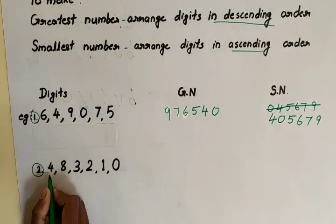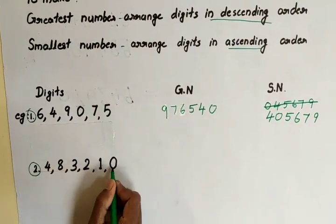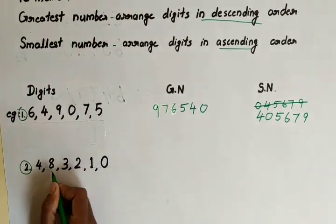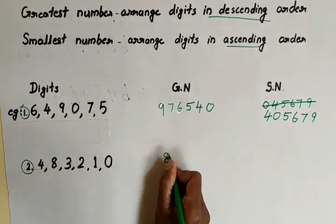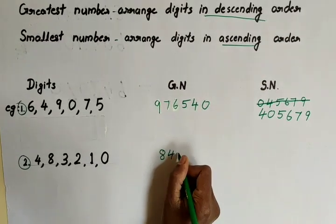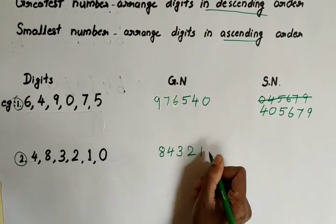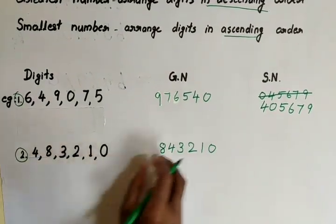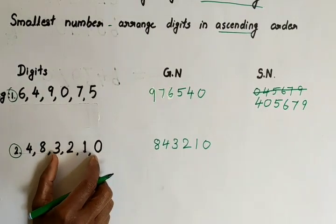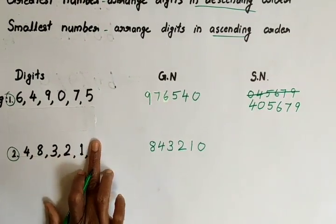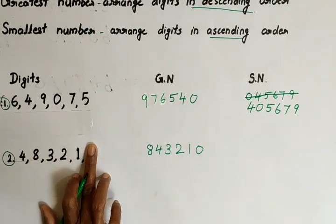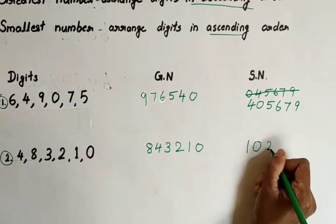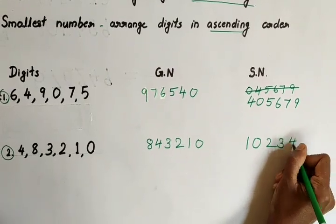Second example — digits are 4, 8, 3, 2, 1, 0. For the greatest number, arrange in descending order, that means biggest to smallest. The biggest number is 8, next biggest 4, next is 3, next is 2, 1, 0. For the smallest number, 0 is here, so leave 0. Find the next smallest — that is 1. Write 0 now: 1, 0, 2, 3, 4, 8.